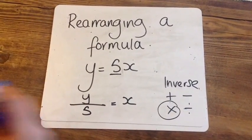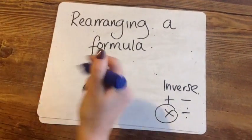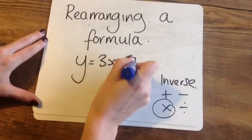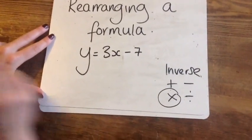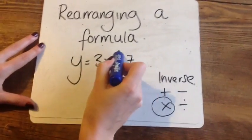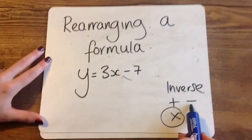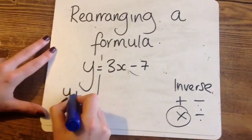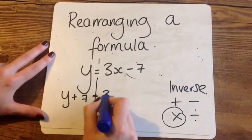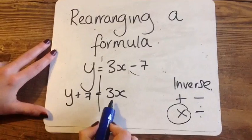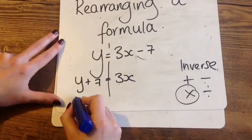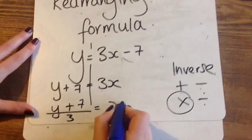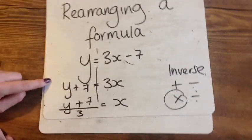What happens, though, if you get a slightly harder one? I'm going to start by moving this minus 7. Minus 7's inverse is add 7. So let's move it over. Y add 7 equals 3X. Then I'm going to move this 3. Y add 7 divided by 3 equals X. And I've finished.